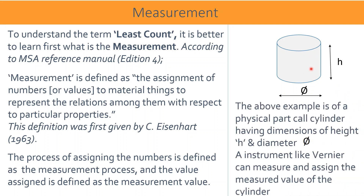The cylinder has dimensions of height, denoted by the letter H, and diameter, denoted by the symbol phi. An instrument like a vernier caliper can measure and assign the measured values of the cylinder. Both the diameter and height can be measured with the vernier caliper, and those values are assigned to the physical entity — the cylinder.